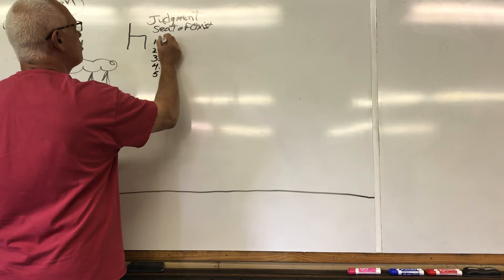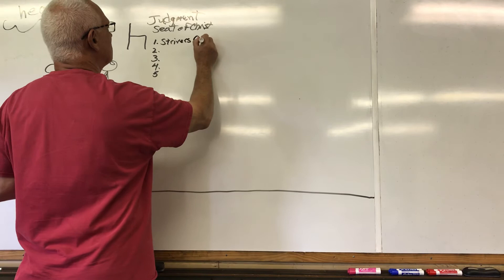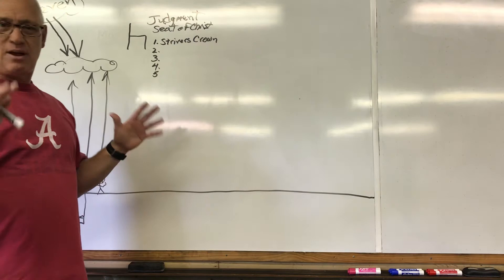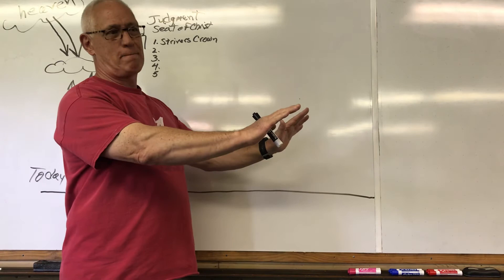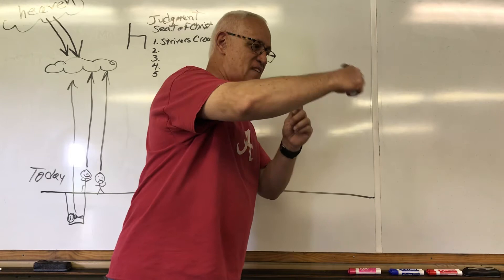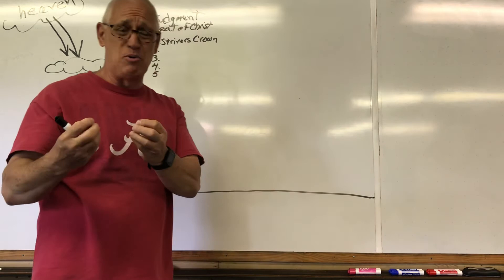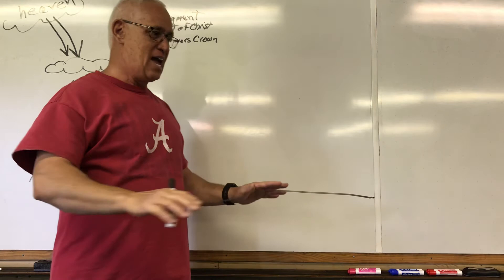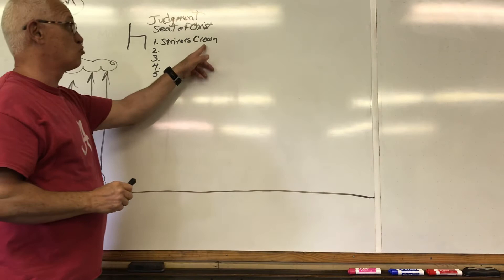First of all, the striver's crown. This word crown, by the way, is Stephanas. It's Stephanas in the old Greek games, and remember they were the ones that gave us our Olympics. If you won, you would come before the emperor. He would call you up to a platform, bend down and put this Stephanas, a little twine vine with some leaves on it, on you. It was greatly treasured.